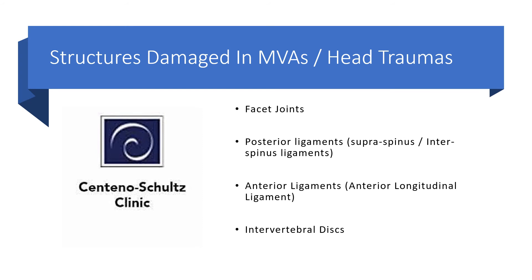Let's talk about what structures are actually damaged as a result of cervical instability. That would be the facet joints, because the ligaments don't help protect the neck so there's extra stress on the facets. The posterior ligaments such as your supraspinous and interspinous ligaments, your anterior longitudinal ligaments, and ultimately your intervertebral discs eventually get extra stress and damage, which can create disc bulges and disc tears. These in turn can push on or irritate the exiting nerve roots, creating arm pain, radiculopathy, or radiculitis — where people get not only neck pain but also pain that travels down the upper extremity.